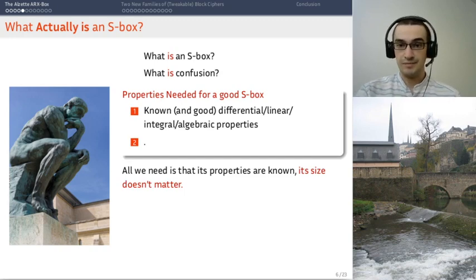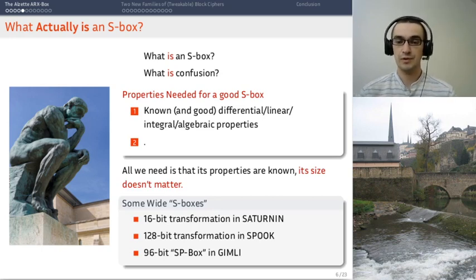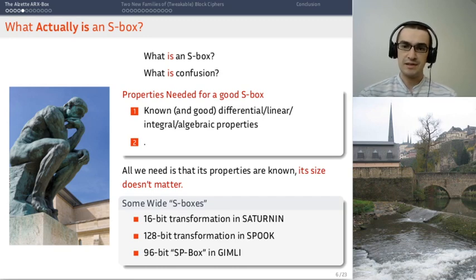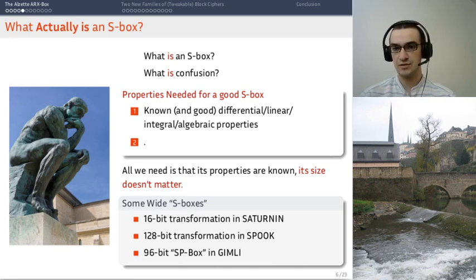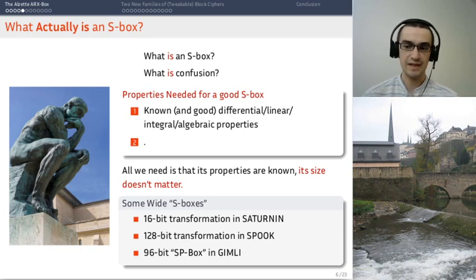The size doesn't matter to define an s-box. And in fact it's not an idea that we're introducing. We already have such things in Saturnin where you have a 16-bit transformation which was considered like a big s-box. You have a 128-bit transformation in Spook which is a bit like a small block cipher which you can see as a big s-box. And then you have four of those in parallel. And you also have the 96-bit SP box in Gimli which can be seen in a way as a big s-box.